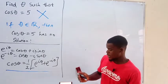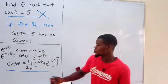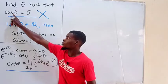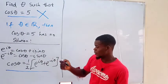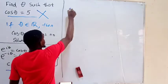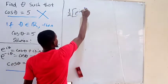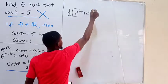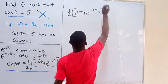Since we have to find theta such that cosine theta equals 5, I'm going to equate this expression for cosine theta to 5. So we'll have one half times e to the iθ plus e to the negative iθ, equal to 5.